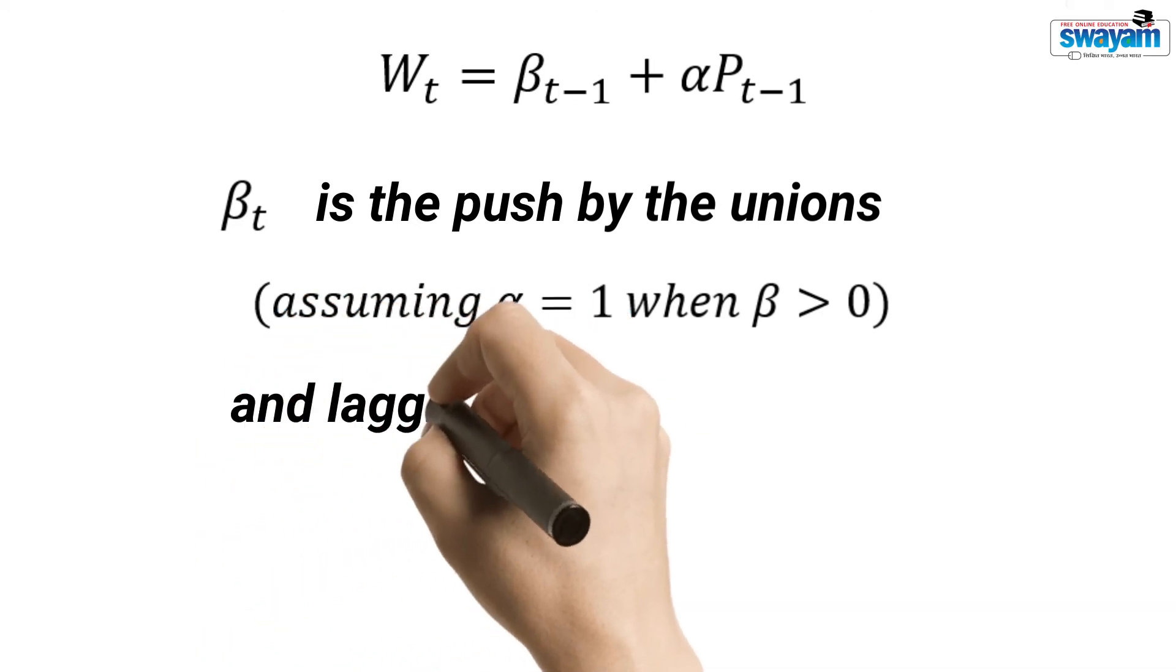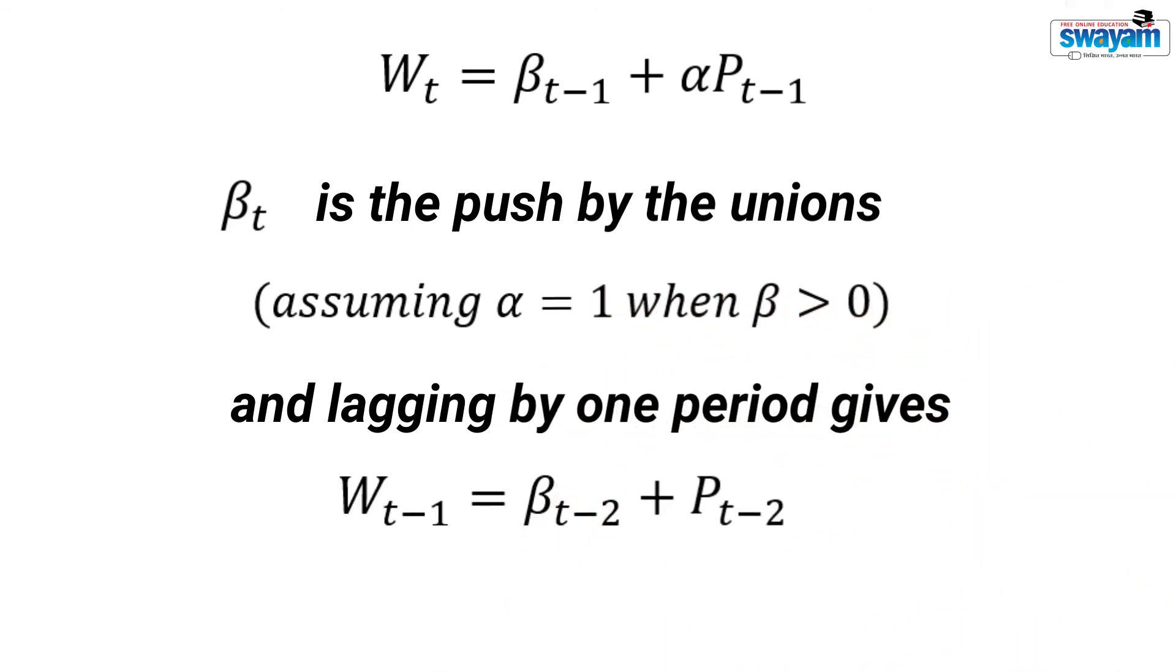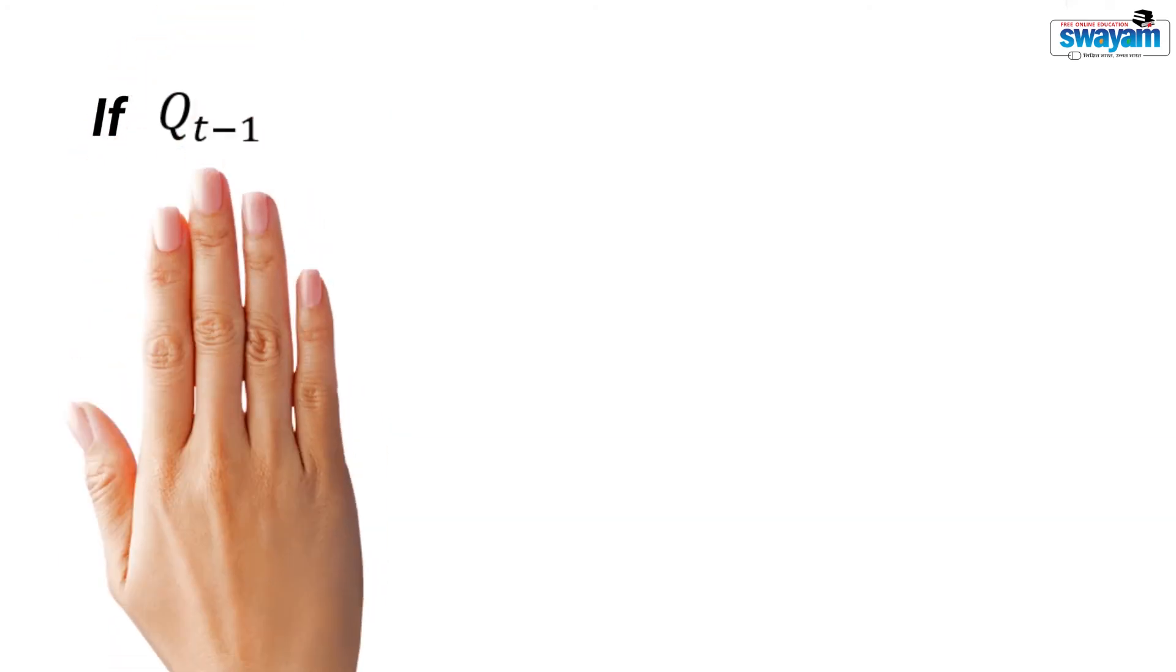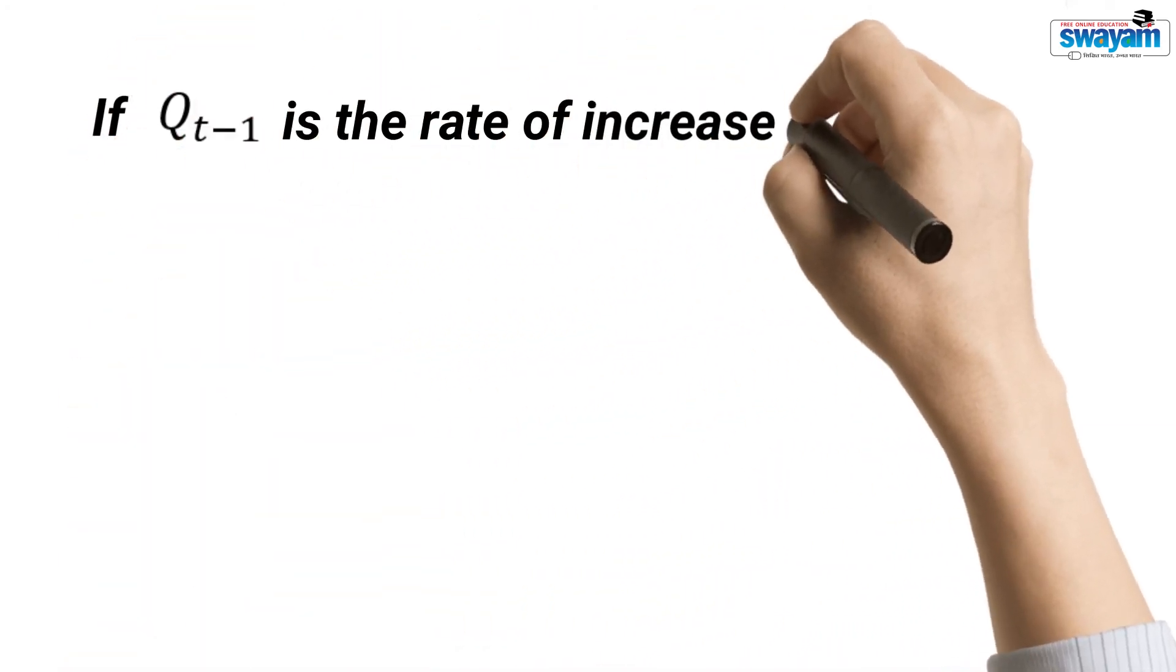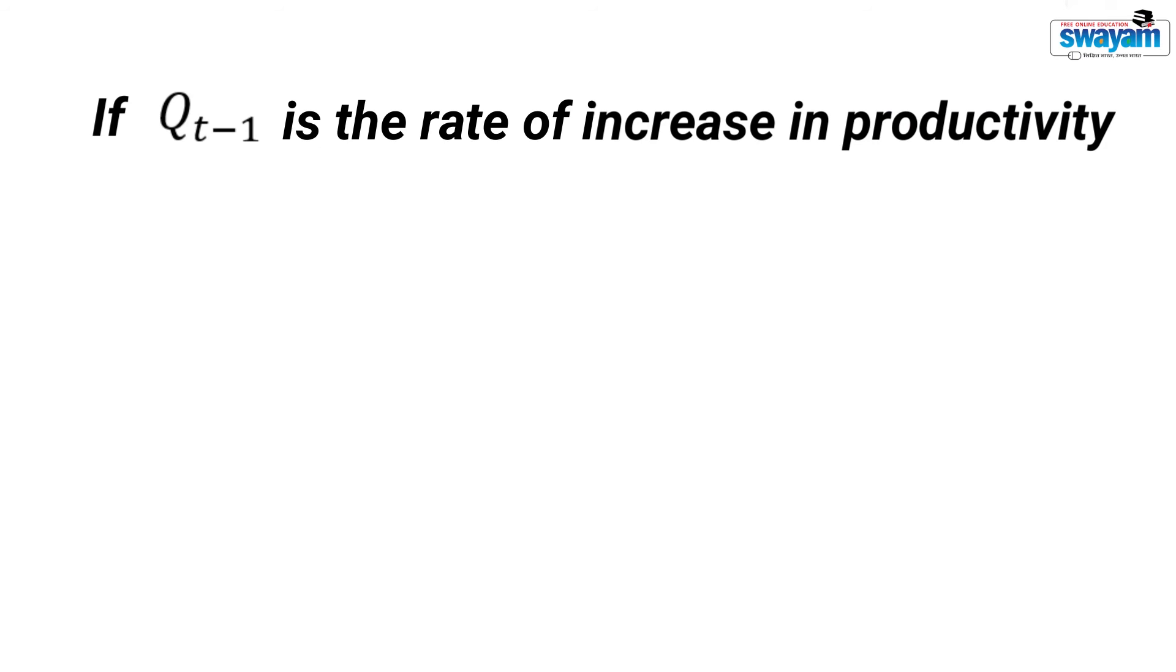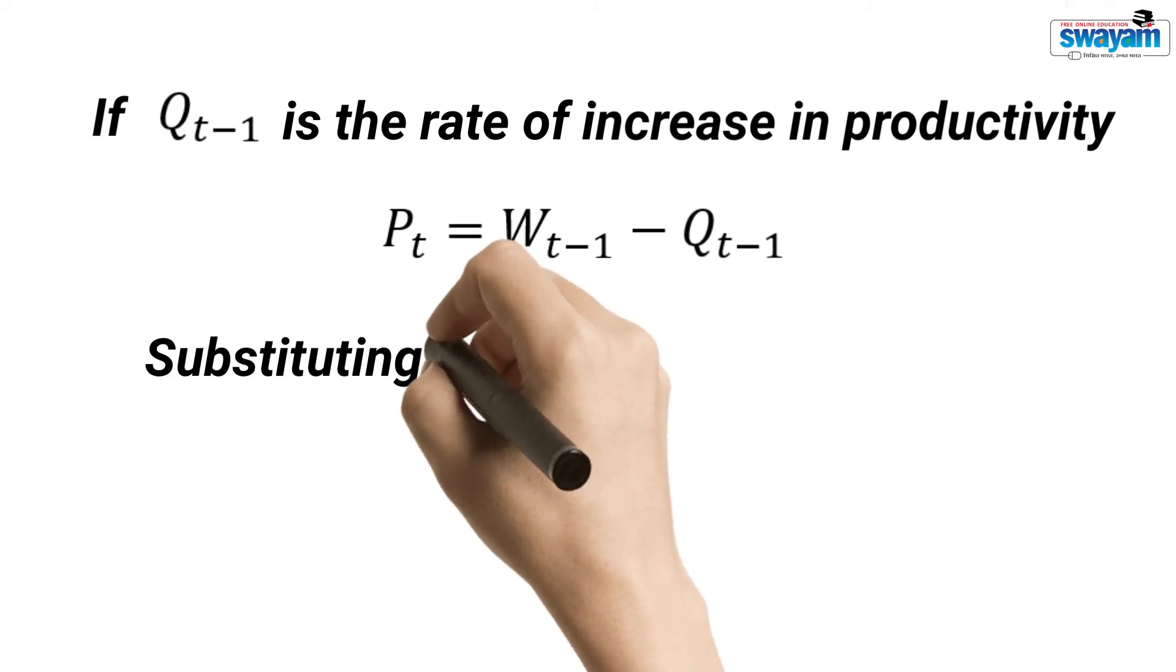Lagging this equation by one period gives this equation. If Qt minus 1 is the rate of increase in productivity, the price adjustment and wage adjustment can be combined together like this. Substituting the lagged wage gives this result.